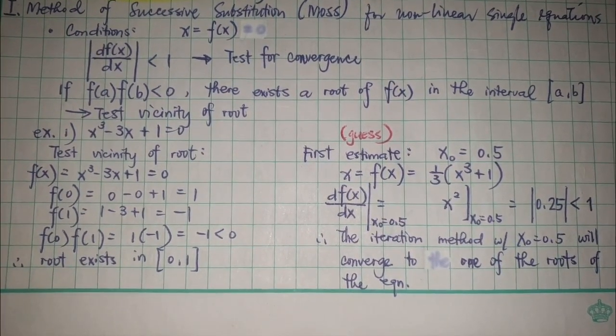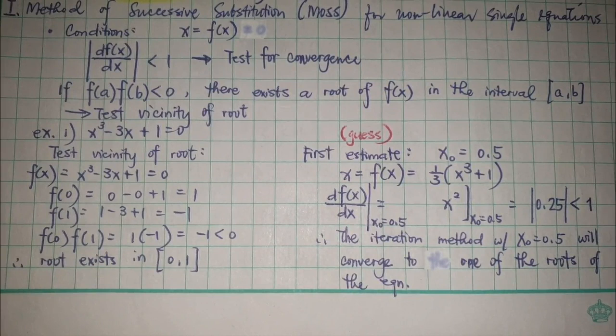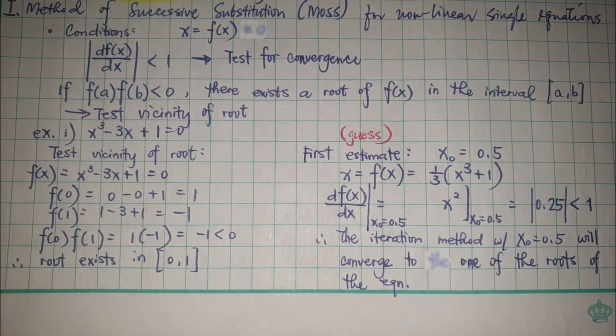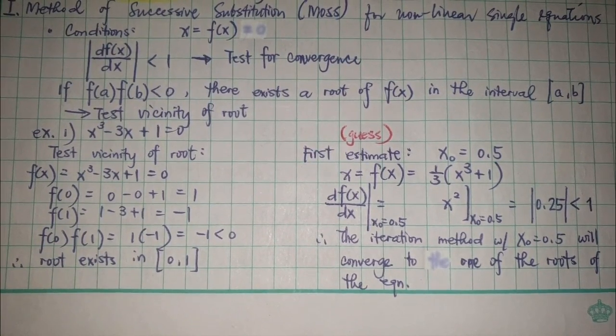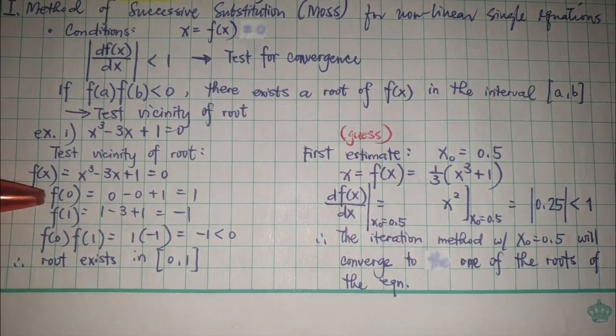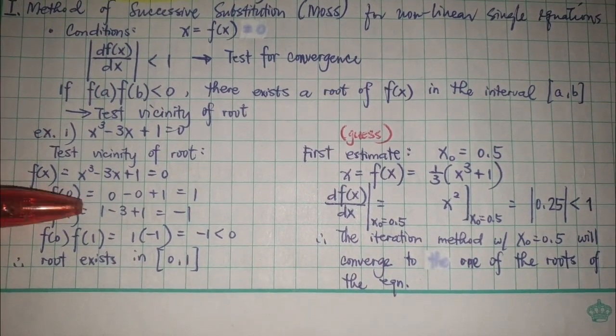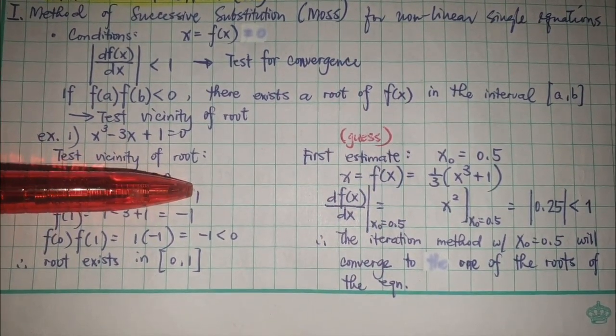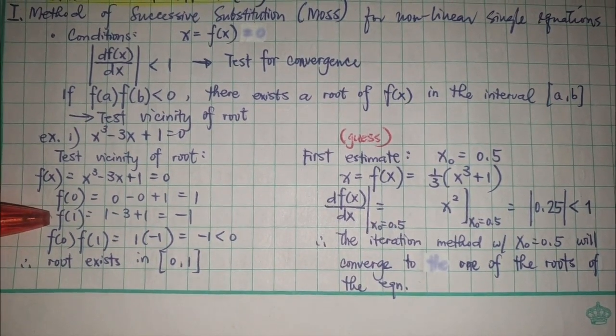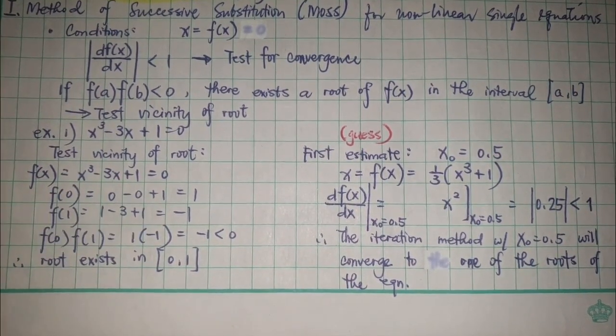For the example x³ - 3x + 1 = 0, we'll test the vicinity of the roots. I nominated 0 and 1 as two possible roots. When I plugged in 0 in the function of x, it gave me 1, positive 1. When I tested 1, it gave me negative 1.